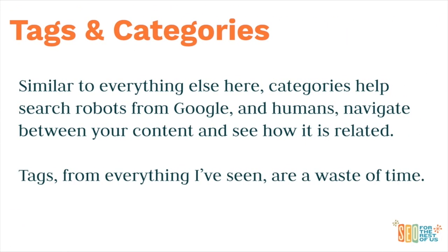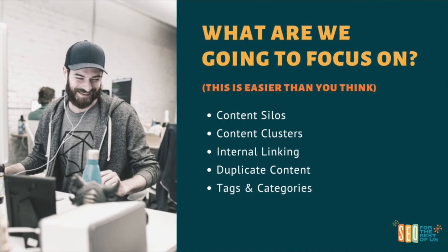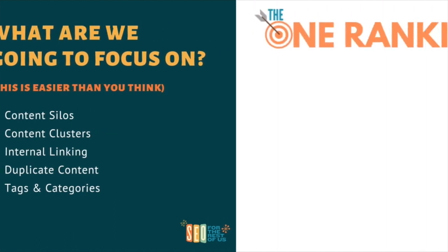Finally, we're going to take a look at tags and categories. Categories are going to help robots and also humans navigate between your content and see how it's related. This might be a weird opinion — feel free to disagree in the comments below — but tags, especially on WordPress websites, are a total waste of time from everything I've seen, unless you're trying to rank a tag page or using tags synonymously with categories. I find categories work a lot better. Duplicate content isn't that big of an issue unless you have an e-commerce website with thousands of products and you're not using something like Shopify that makes setting up canonicals really easy.